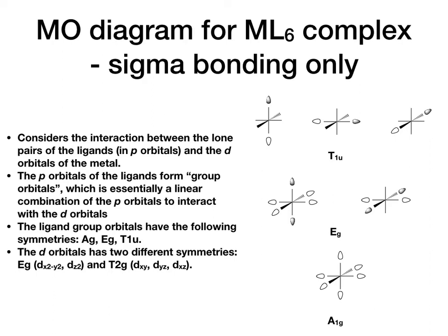What makes this situation complicated is that we have six ligand orbitals. This is very different from the diatomic molecule case, where we can use atomic orbitals of two atoms to directly interact and find symmetry-matching pairs. In this case, that will not work mathematically. Instead, group theory requires that we use so-called group orbitals, which are linear combinations of the p orbitals to interact with the d orbitals of the metal.